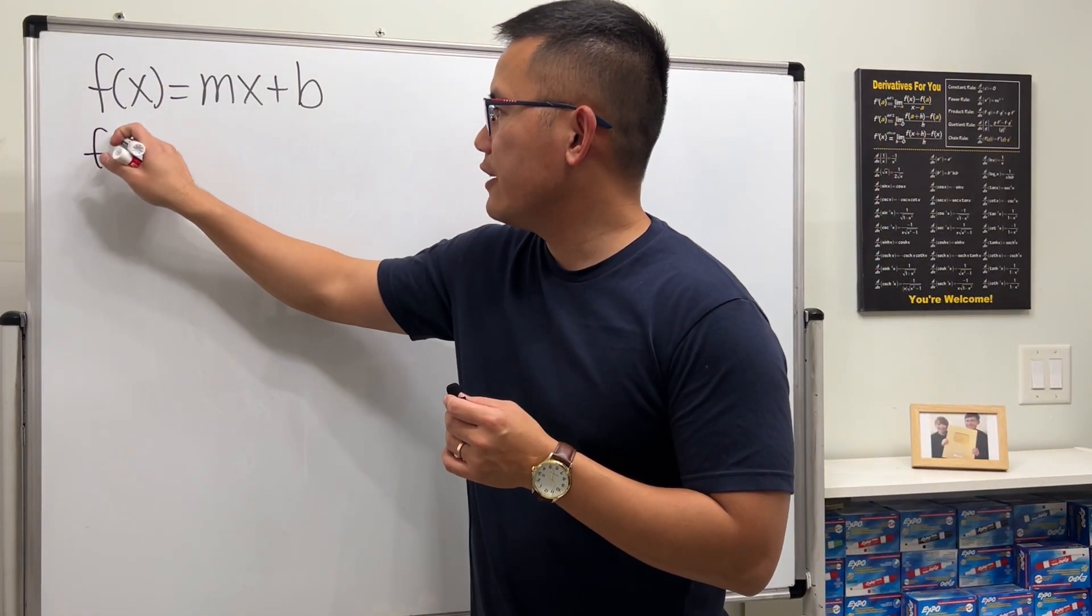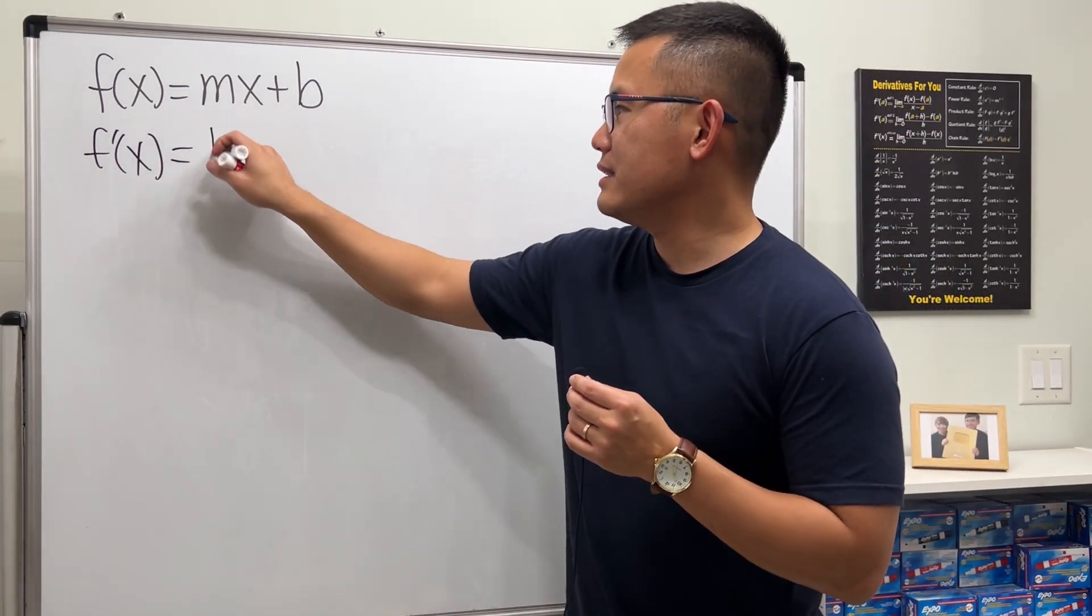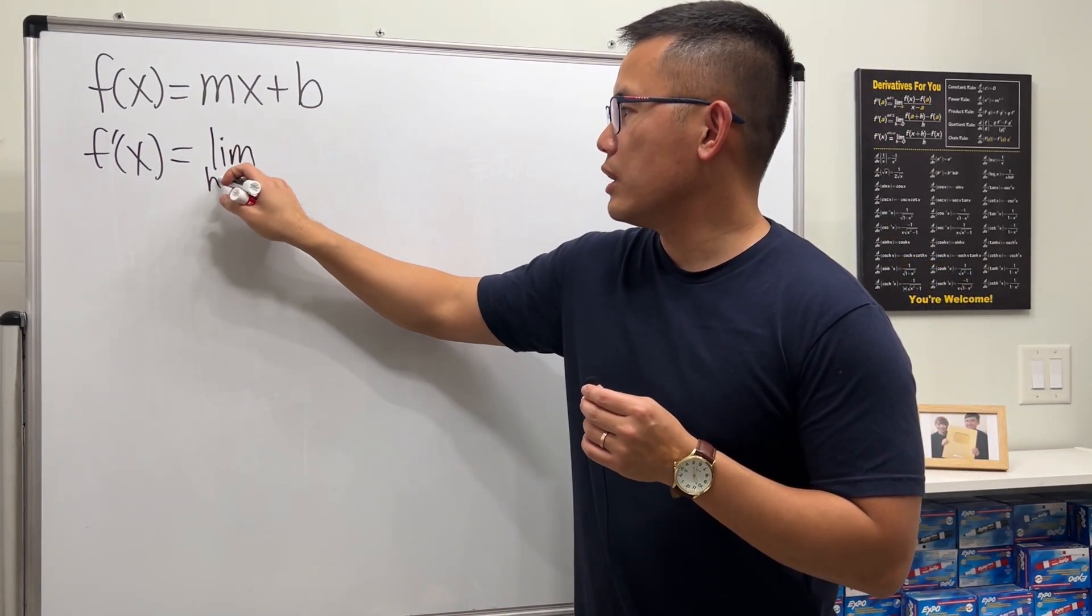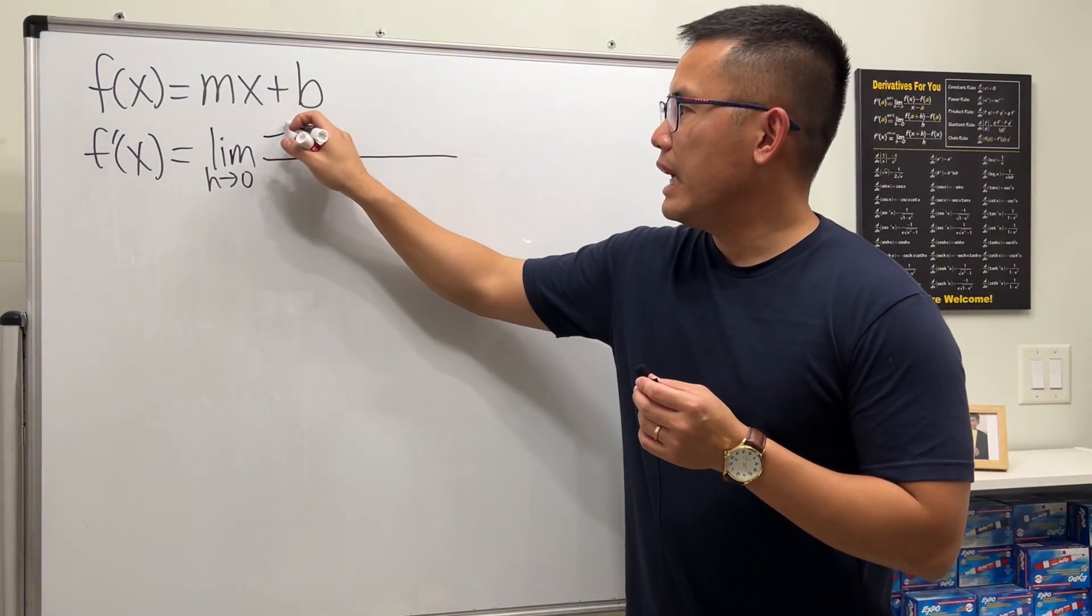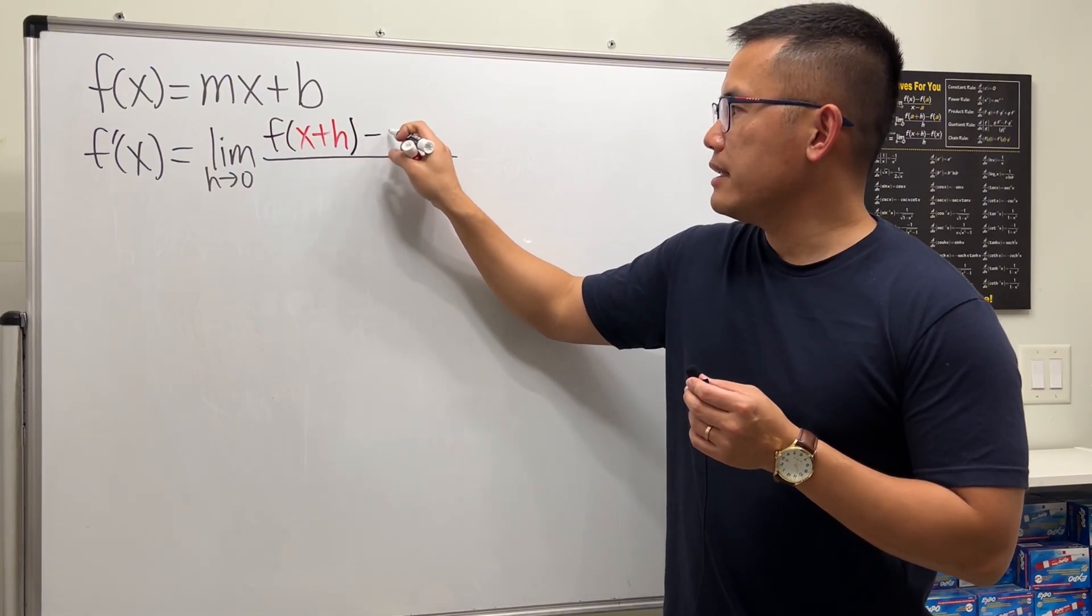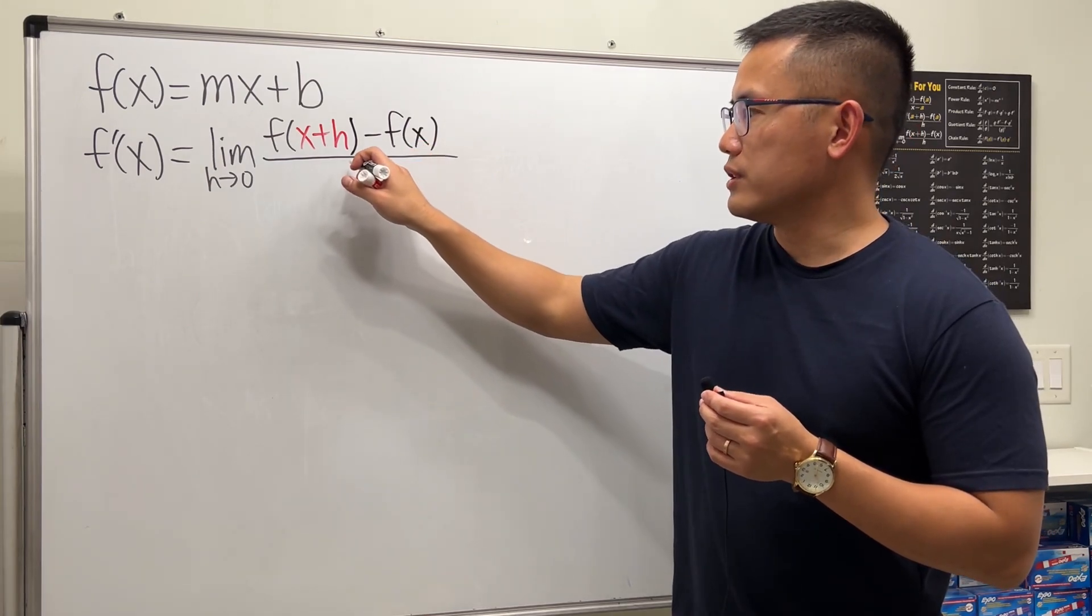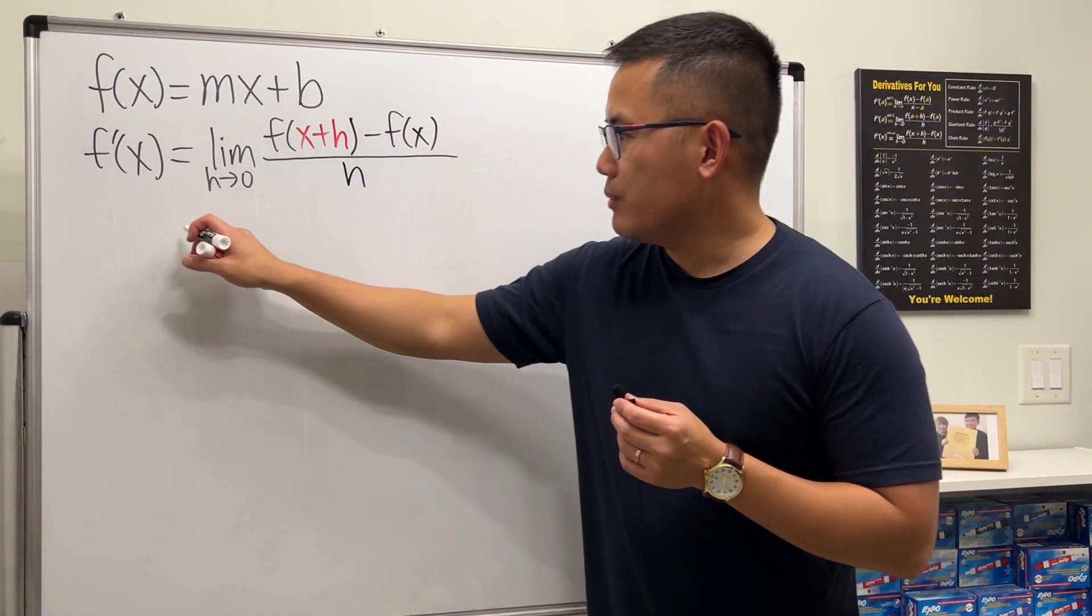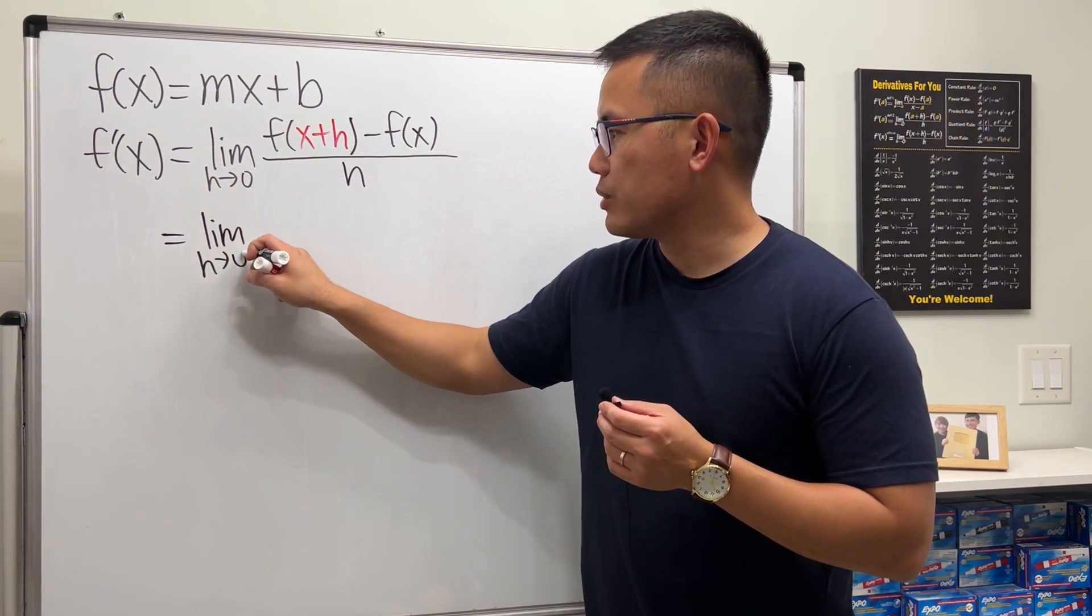So first, f prime of x, you have to remember the definition. This is the limit as h approaching 0, and on the top we have f of x plus h minus f of x, over just h.